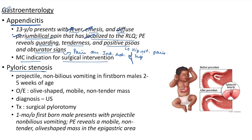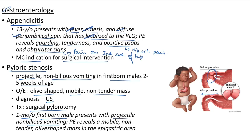Pyloric stenosis presents with projectile non-bilious vomiting in first-born males at 2-5 weeks of age. On examination: olive-shaped mobile non-tender mass. Diagnosed using ultrasound; treatment is surgical pylorotomy. Clinical case: 1-month-old first-born male presents with projectile non-bilious vomiting; physical examination reveals a mobile non-tender olive-shaped mass in the epigastric area.